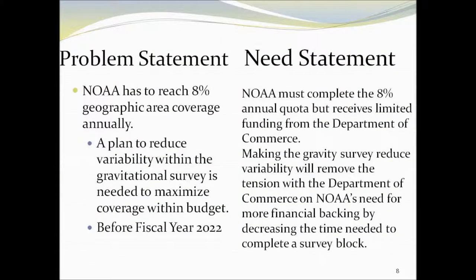The problem of this project is that NOAA is unable to reach their target completion goal with the current process and resources. They need to reach 8% area coverage while staying within budget. There is a need to improve the execution of gravity surveys so that NOAA may reach their goal.